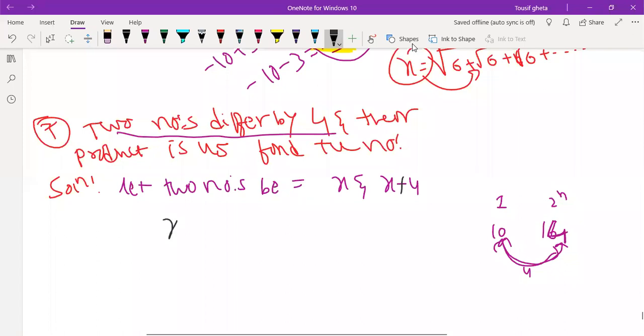So product means x into x plus 4 is equal to 45. So x square plus 4x minus 45 equals to 0. Now I will factorize it.